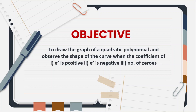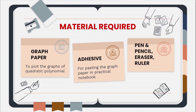So what are the materials required for doing this activity? First is graph paper to plot the graph of the quadratic polynomial. Second is adhesive for pasting the graph paper in your practical notebook, and some stationery items: pen, pencil, eraser, and ruler.